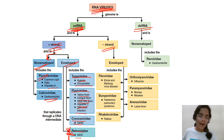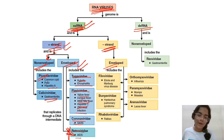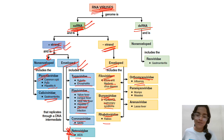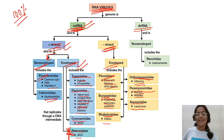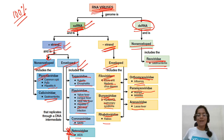Negative sense single-stranded RNA enveloped viruses include: Filoviridae — Ebola and Marburg virus — Bunyaviridae — Hantavirus pulmonary syndrome — Rhabdoviridae — rabies — Orthomyxoviridae — influenza — Paramyxoviridae, and Arenaviridae — Lassa fever. These are many confusing names but important to remember as questions come from this. Double-stranded RNA non-enveloped is Reoviridae, which causes gastroenteritis.